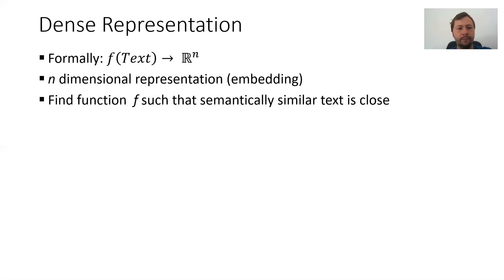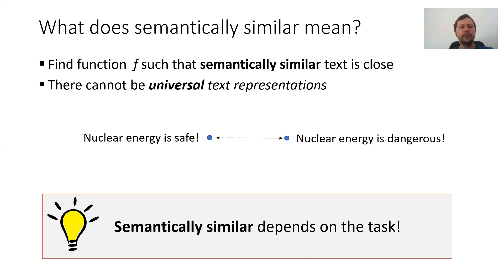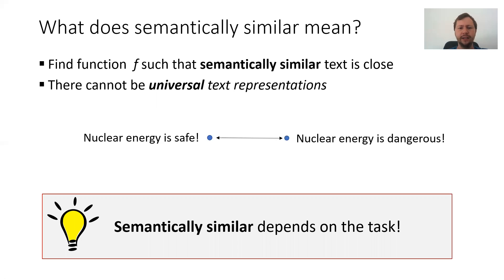As an alternative, there are dense representations. Formally, it's quite easily defined: you have some text and some function, and the function maps the text to an n-dimensional vector space. Usually you use dimensions somewhere between 100 and 1000, and in contrast to a sparse representation, all these 100 to 1000 dimensions are set with values. The goal is to find a function f such that semantically similar text is close in that space.